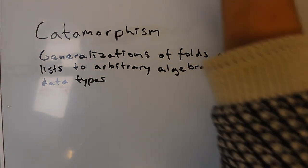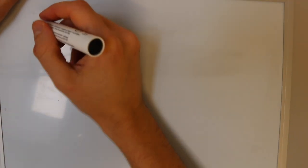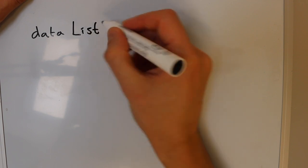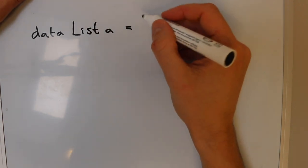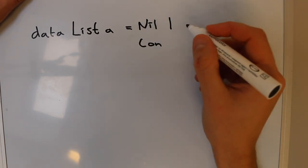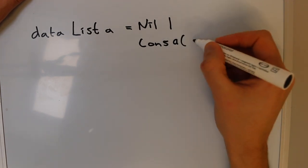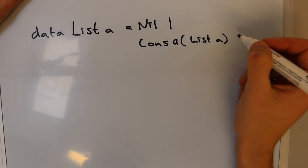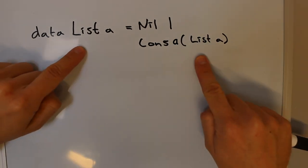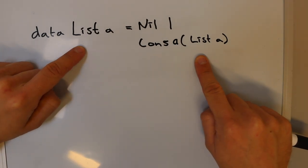First, let's think about what it means for a data structure to be recursive. For the type of a data structure to be recursive simply means that it is expressed in terms of itself. As an example, a list is either nil or it is a cons of some value followed by another list. This is a recursively defined data type because for the cons case one of the fields is a list — the very thing we're defining.